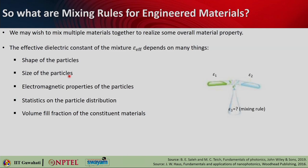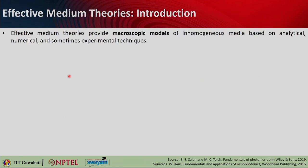How much volume one particular material is covering also plays a very important role. Effective medium theories can provide a macroscopic model of inhomogeneous media based on analytical, numerical, and sometimes experimental techniques. They are essentially a description of composite materials in terms of effective medium approximations.